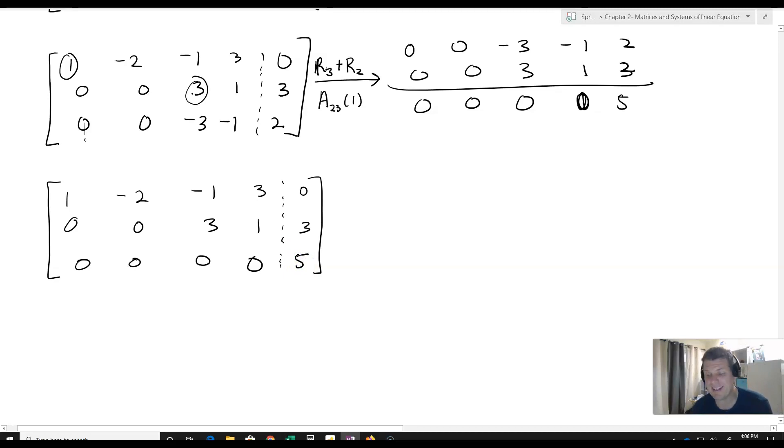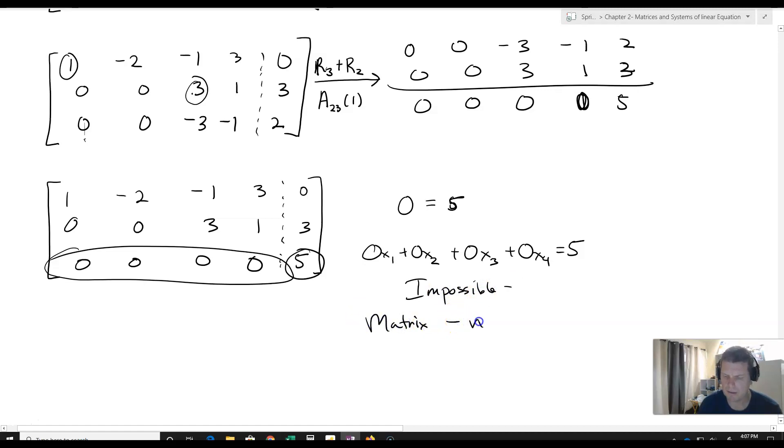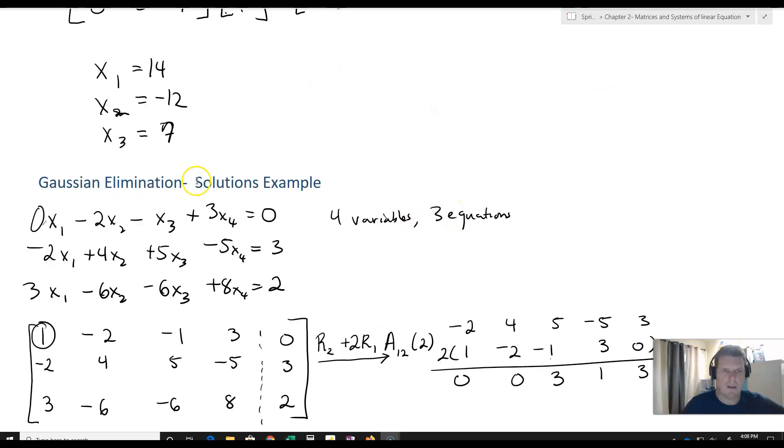Uh-oh, we have a problem. This isn't actually an infinite solutions example. In this case, we've got a row of zeros in the coefficient matrix and a 5 on the solution side. This is basically saying 0 equals 5, which is impossible. So this matrix has no solution. Whenever I get a row of zeros on the coefficient side with a value on the solution side, I get no solution because I'm getting a false statement like 0 = 5. I'm going to change this from an infinite solutions to a no solutions example.